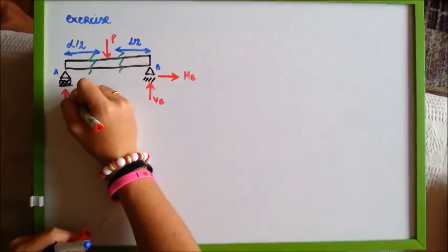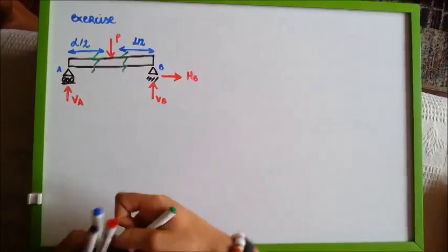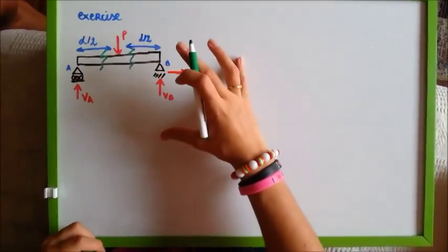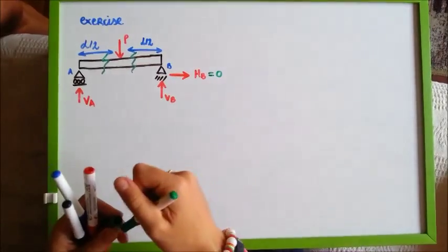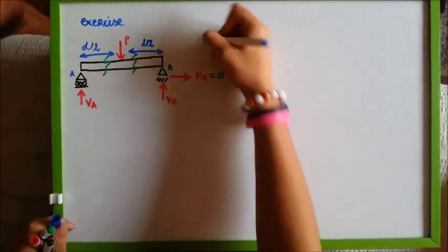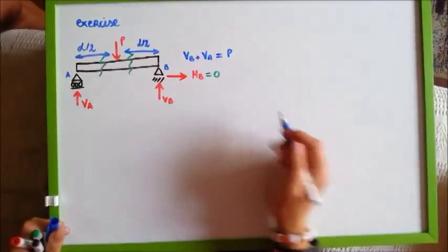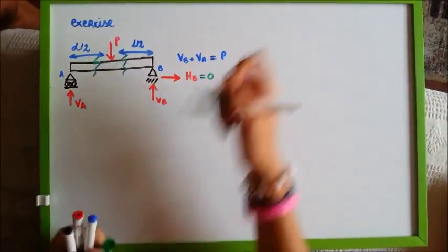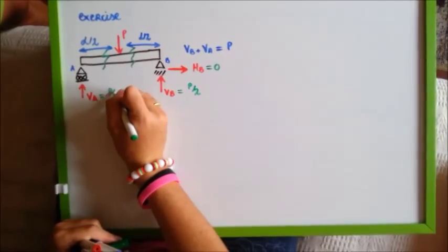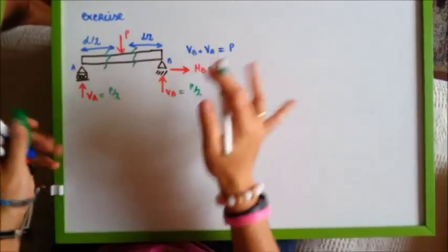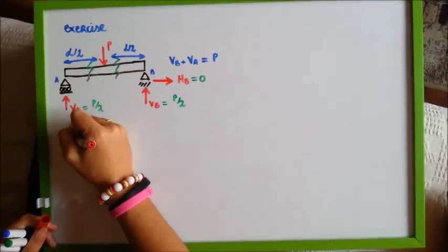This is HB and this is VA. Doing the sum of all the forces in the horizontal direction, as there are no horizontal forces, we know that HB equals 0. We can also write that VB plus VA has to equal P, and because of the symmetry in this case we know both equal P over 2. So here is our first cut.